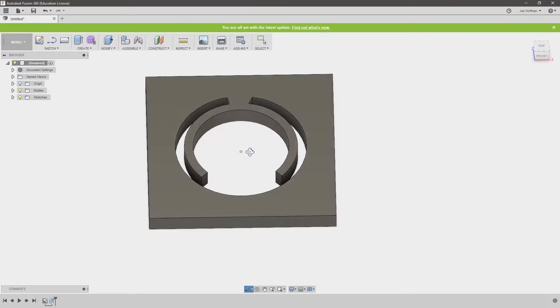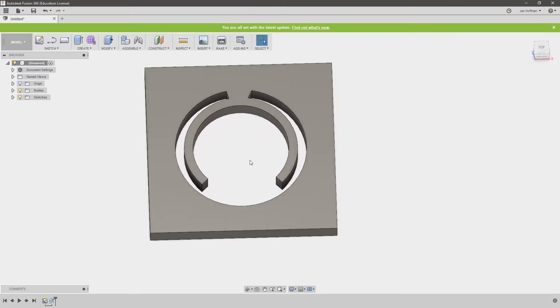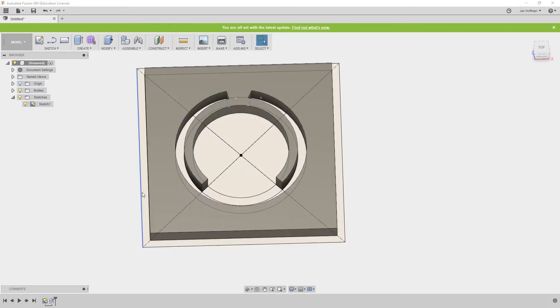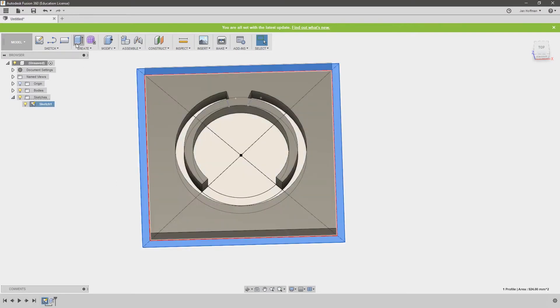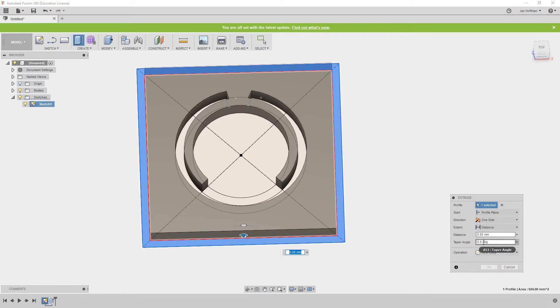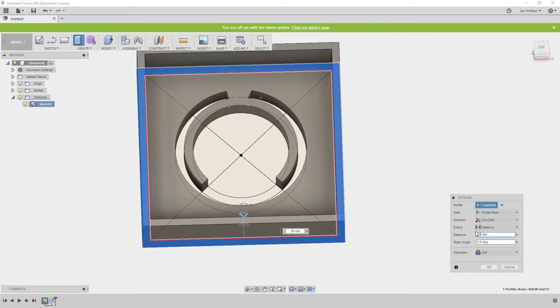And then turn on the sketch, take the last part, the outside, and extrude that out to 2.8 millimeters.